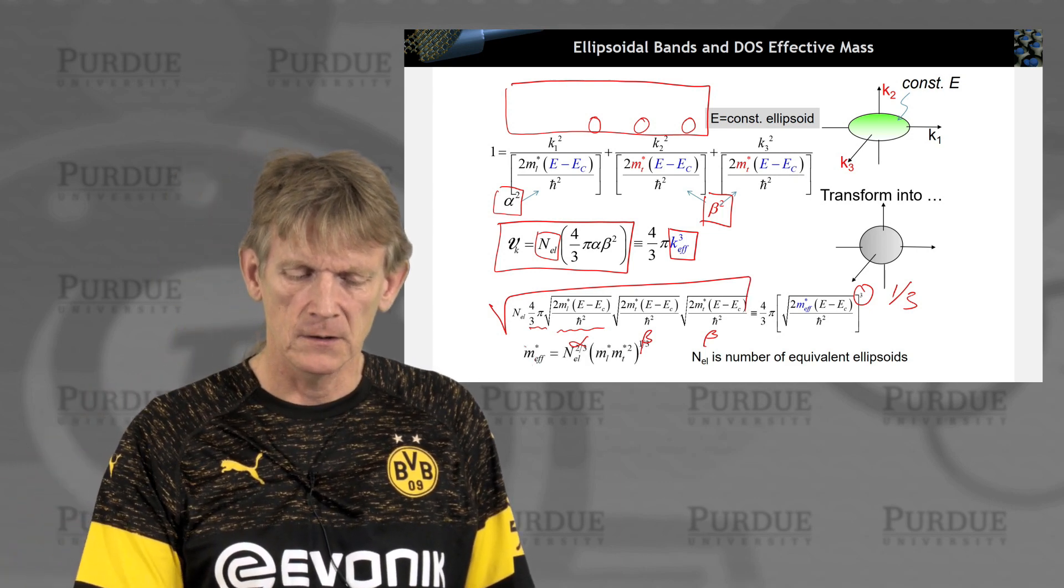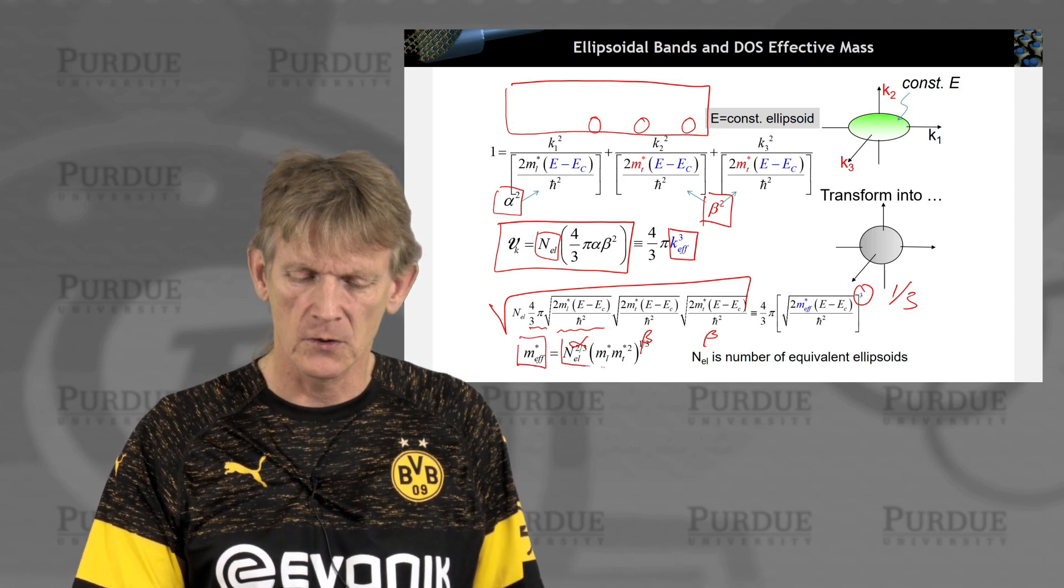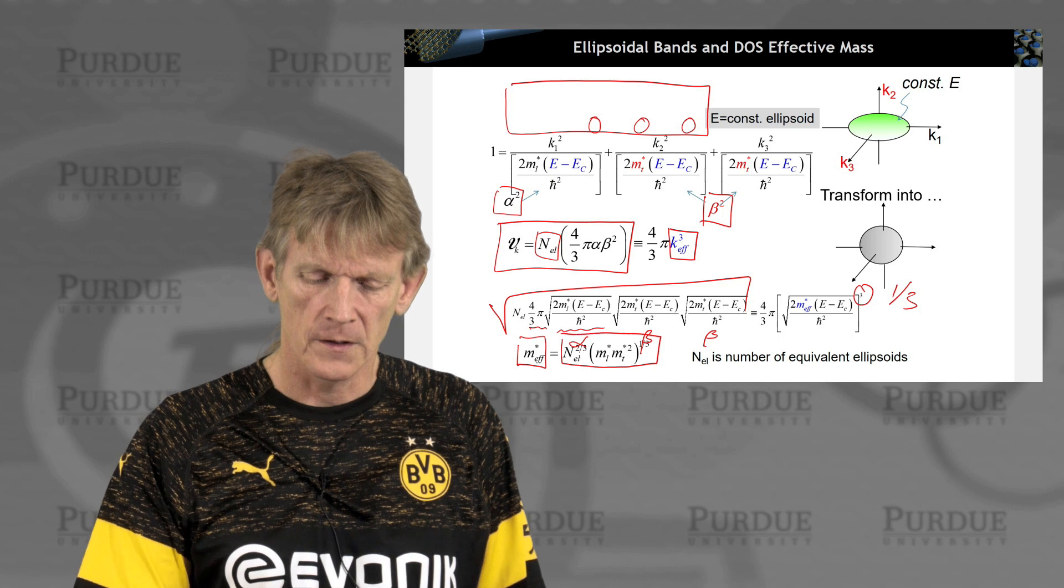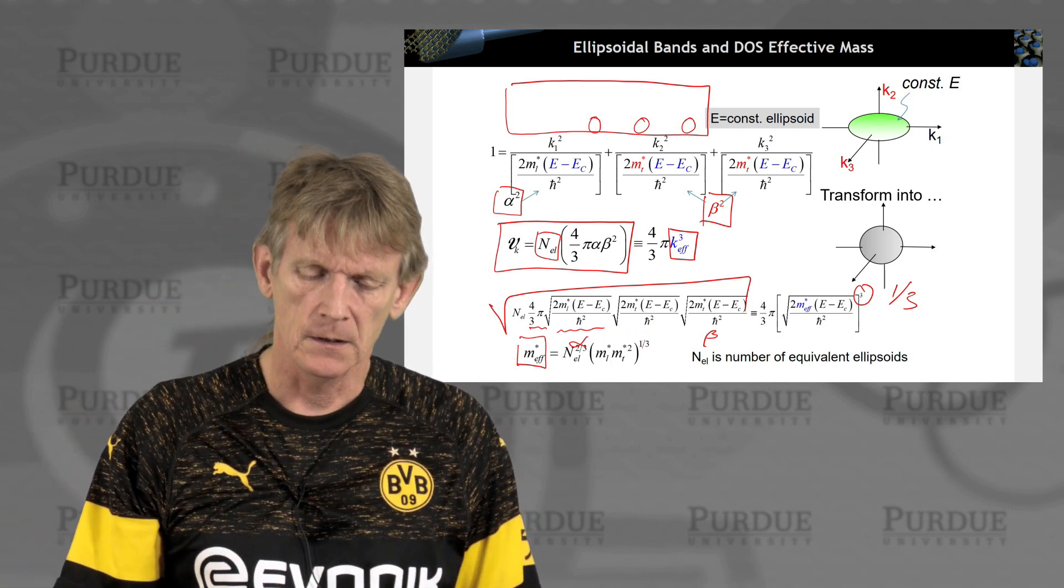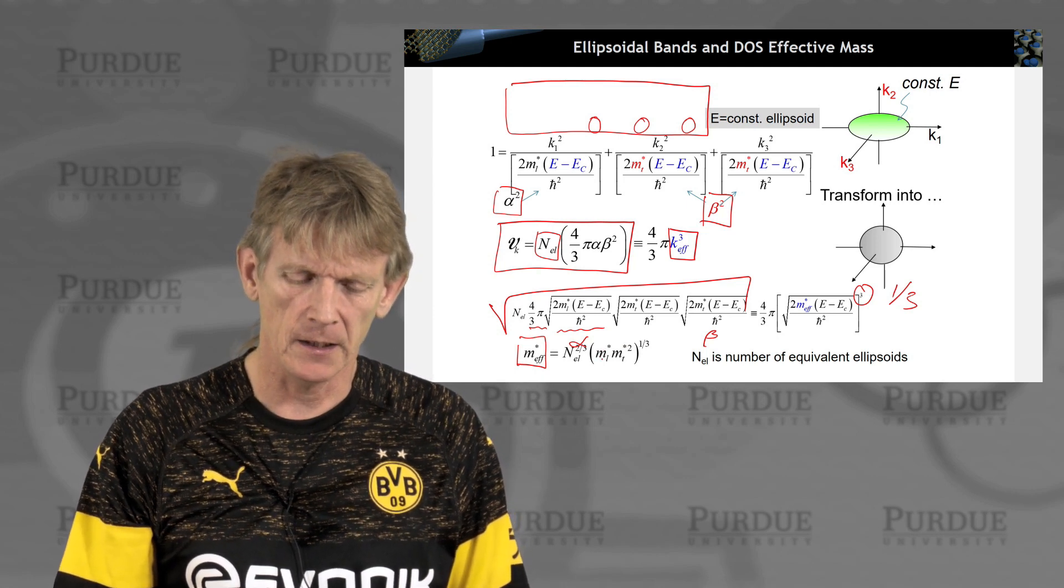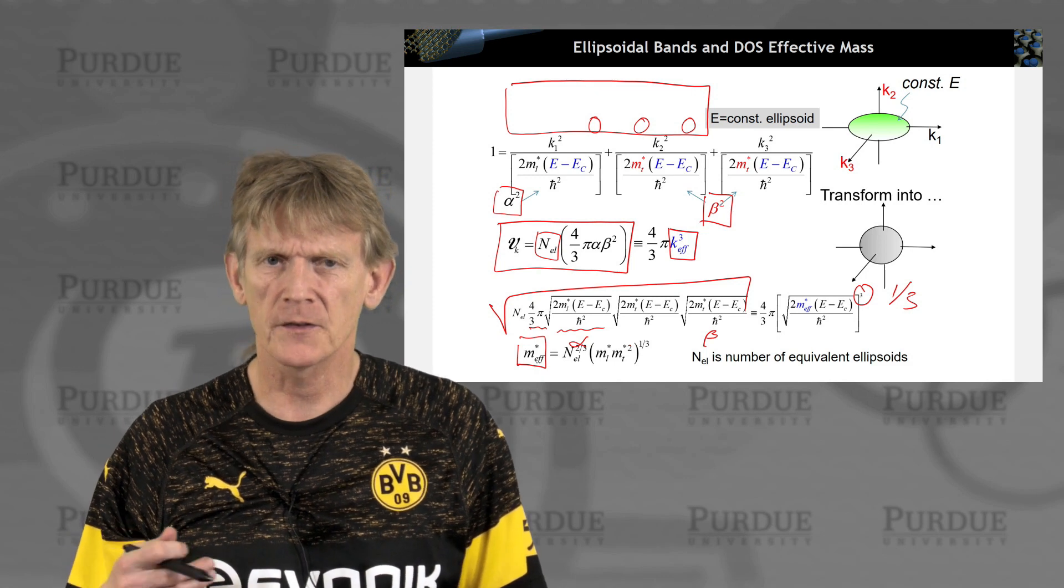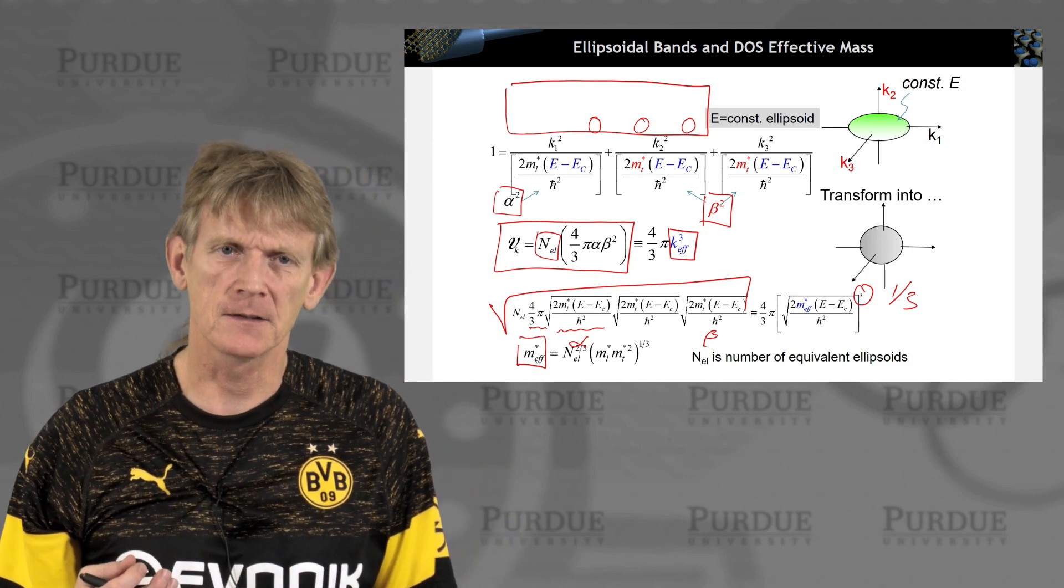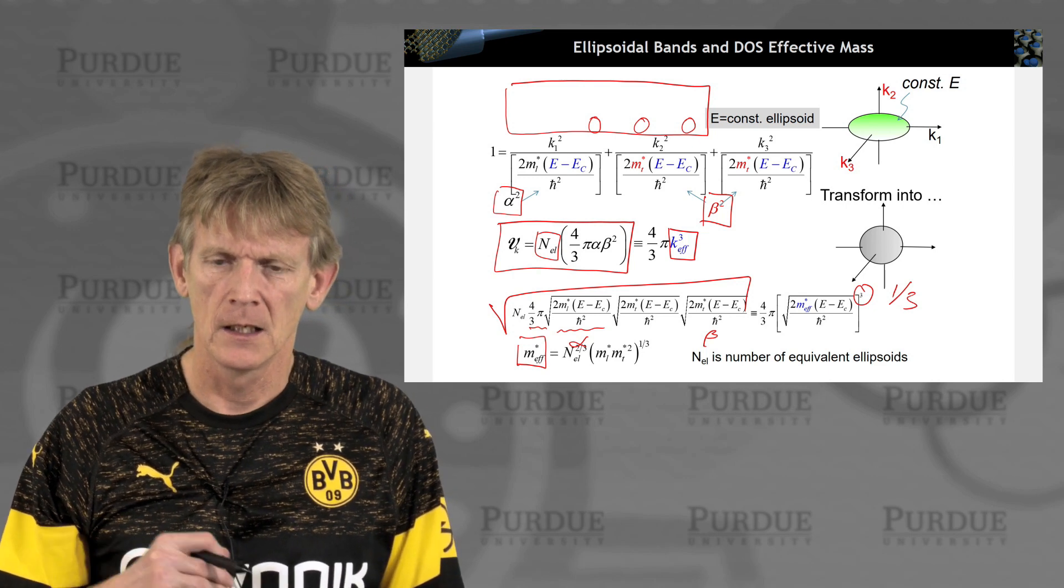So we take the third root here. And what you get is that you can express an effective density of states mass as a function of root of two-thirds with ml star. So you take the third root of the product or the geometric product of ml times mt squared. So that's one way of counting the same amount of states at the isosurface as we have done before.